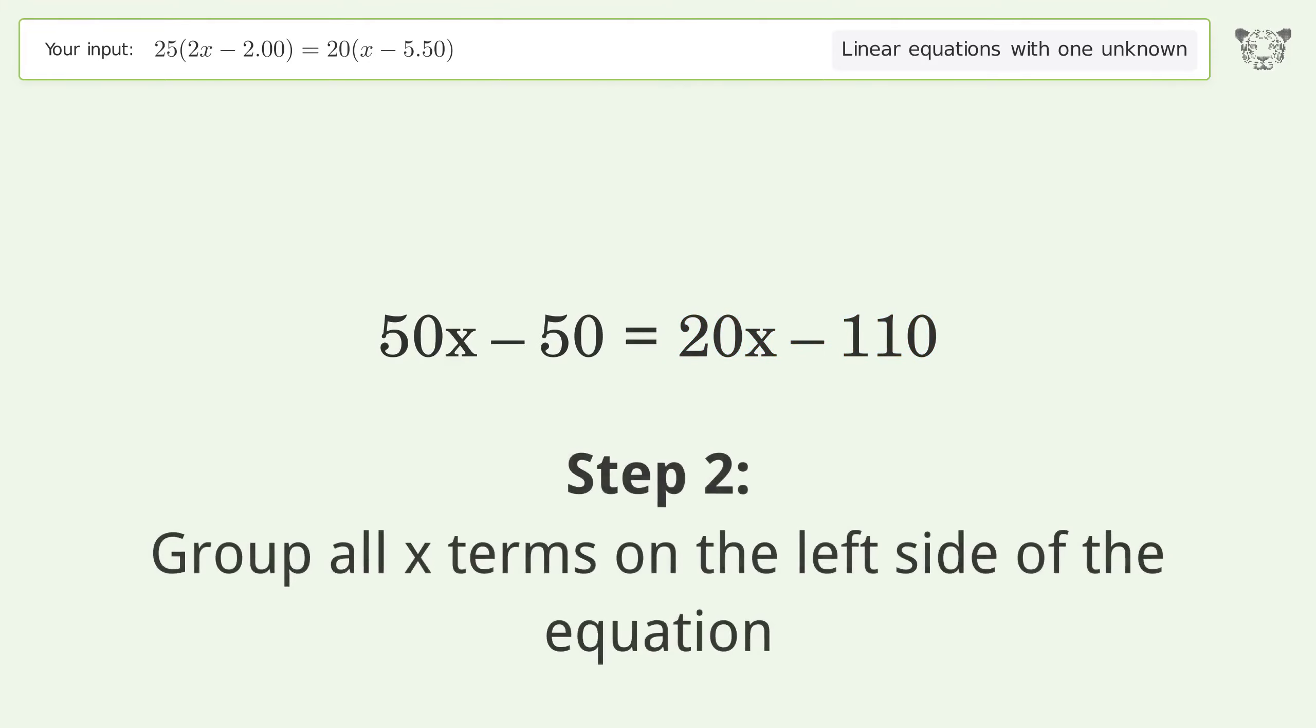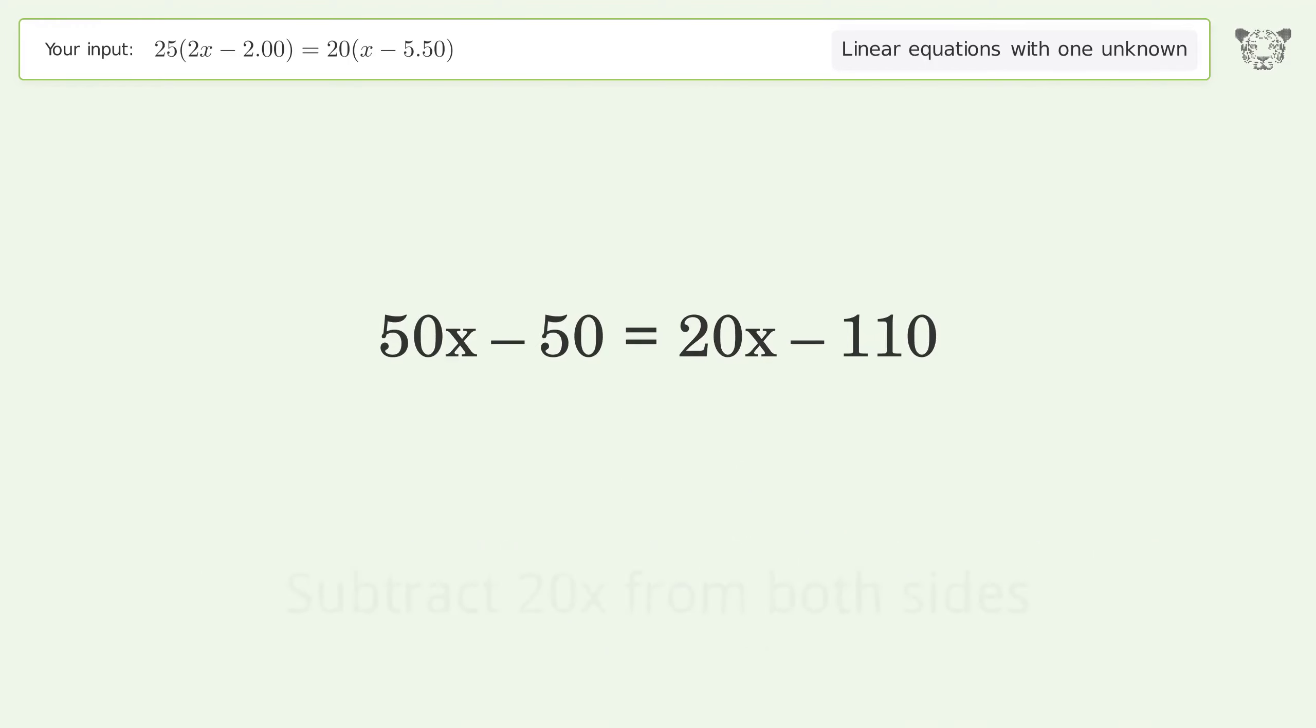Group all x terms on the left side of the equation. Subtract 20x from both sides. Group like terms and simplify the arithmetic.